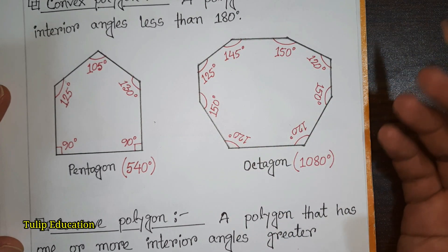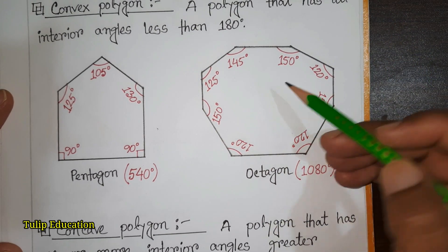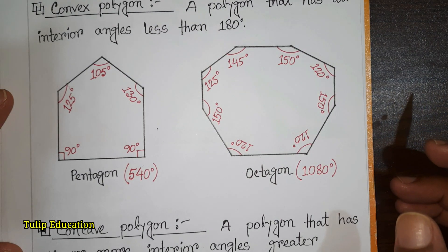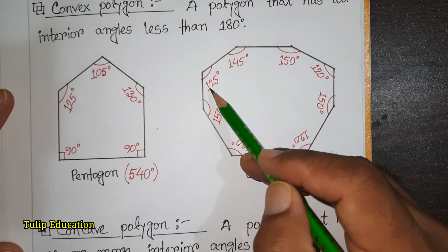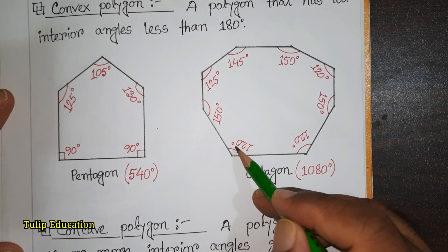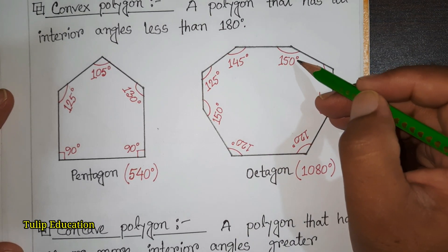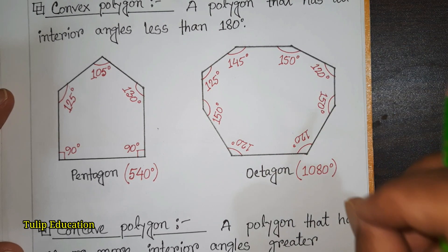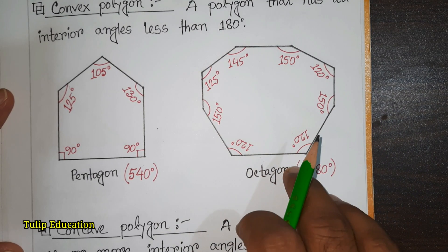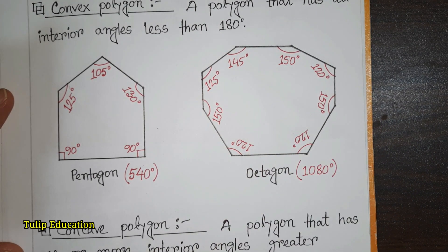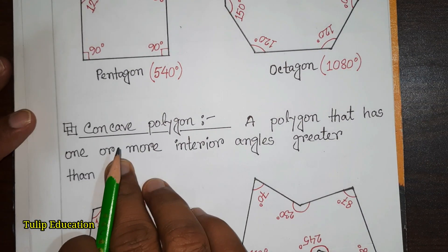In this octagon there are eight angles, and if we measure each angle we can see no angle is greater than 180 degrees. The angles are 145, 125, 150, 120, 120, 150, 120, and 150 degrees. Every angle is less than 180 degrees, so this type of polygon is called a convex polygon.